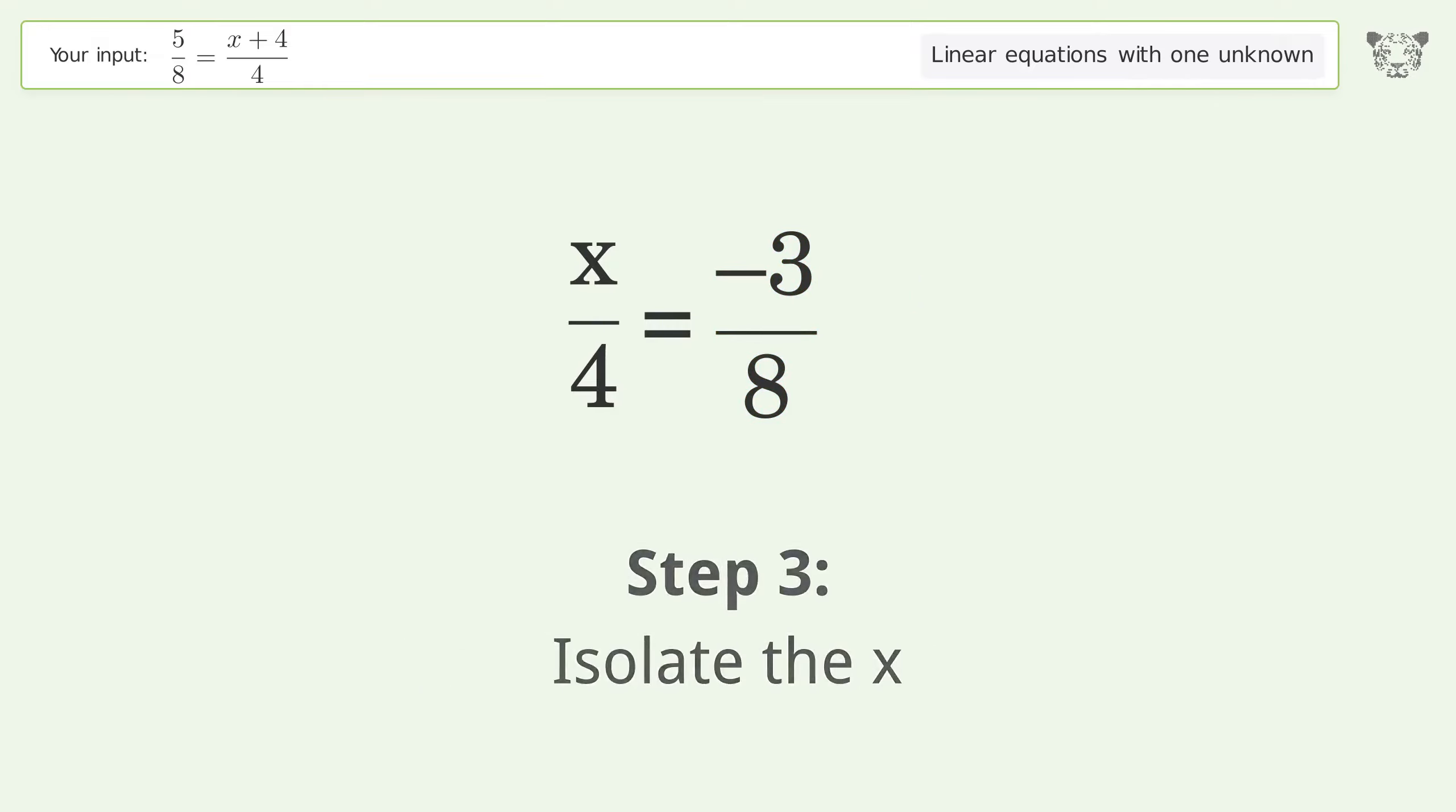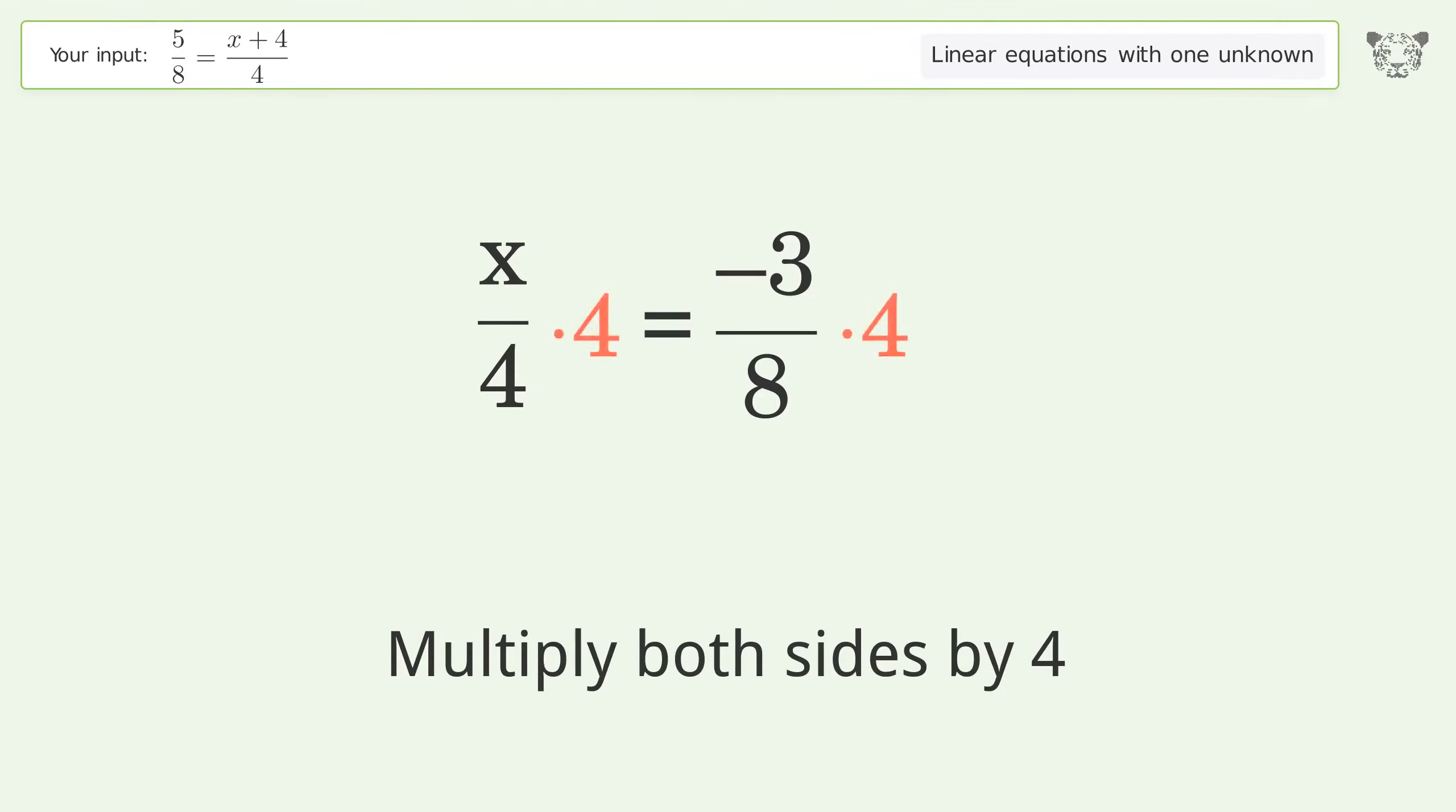Isolate the x. Multiply both sides by 4. Group like terms.